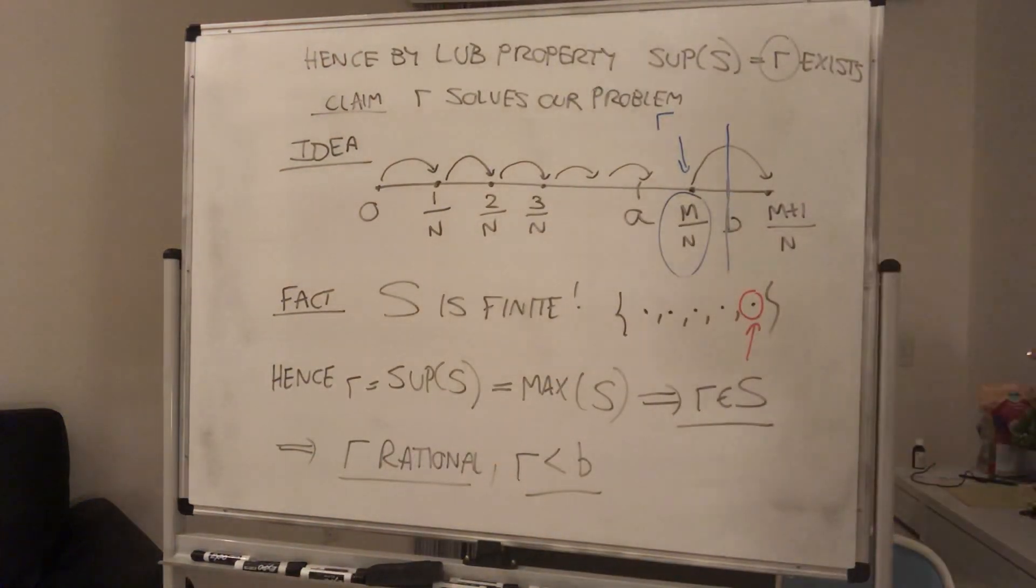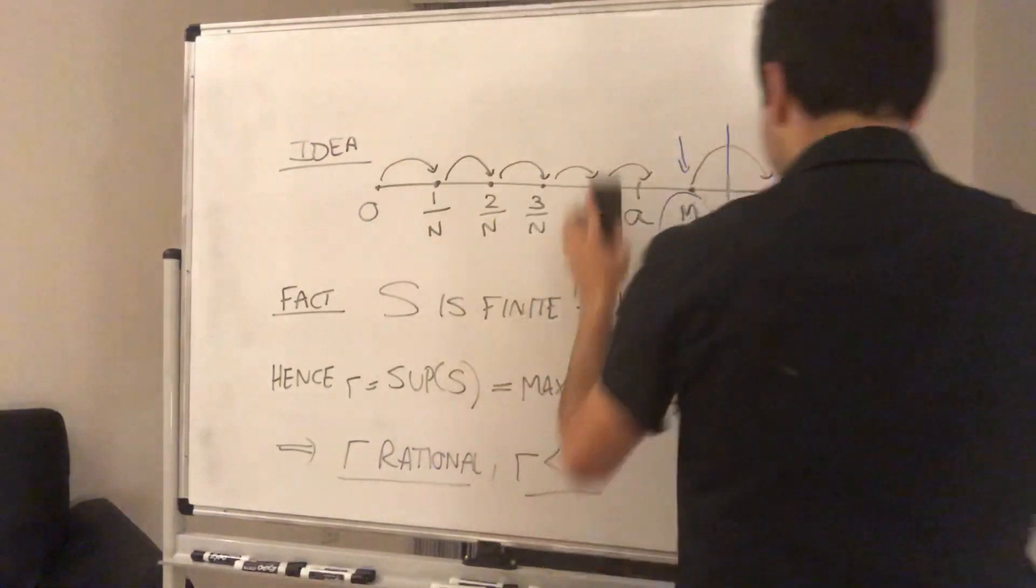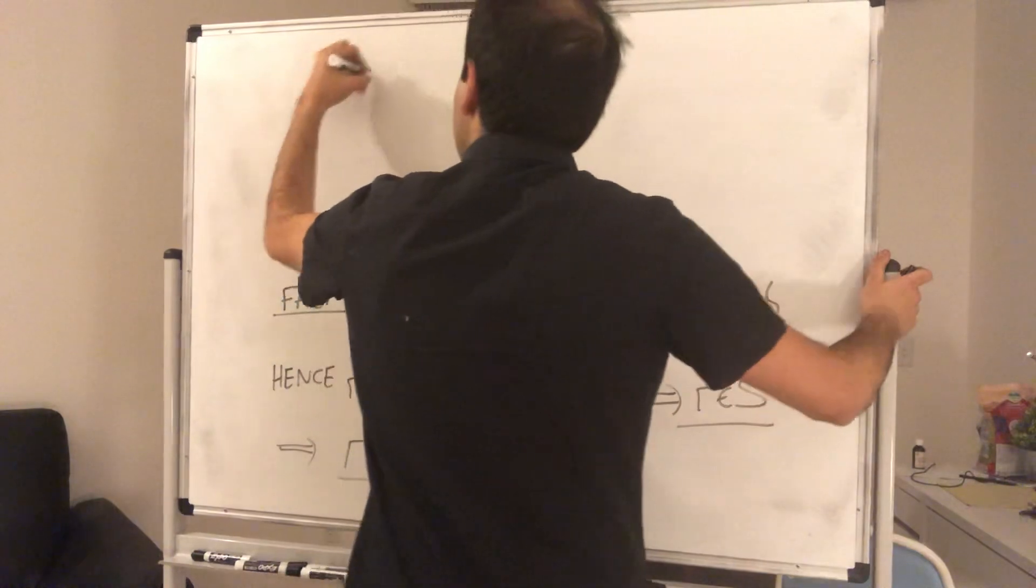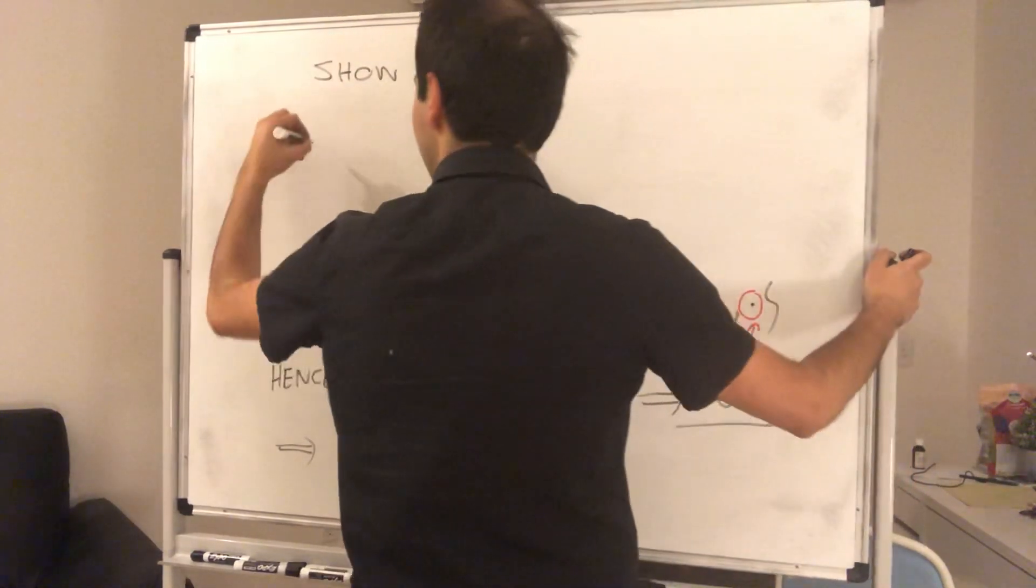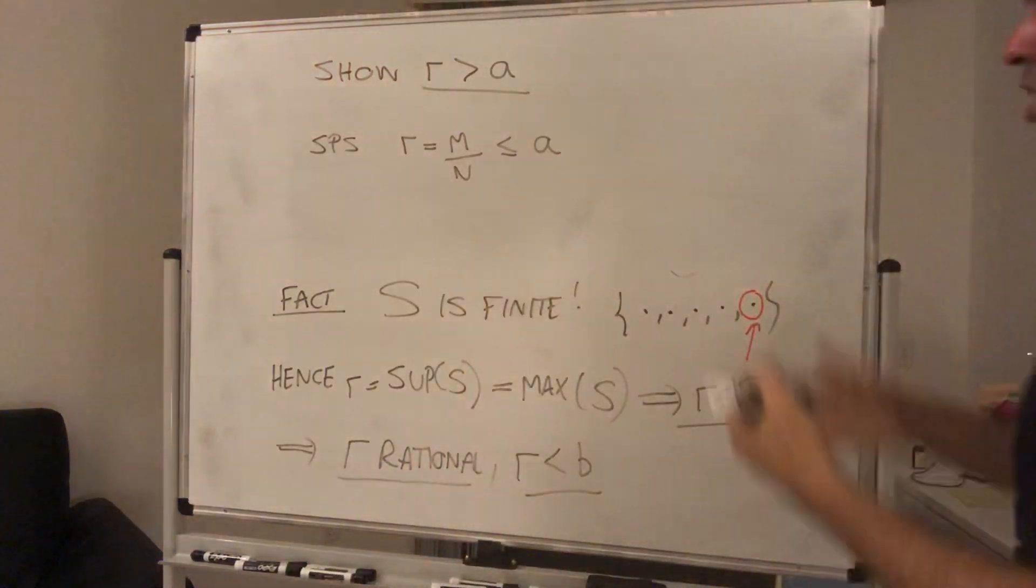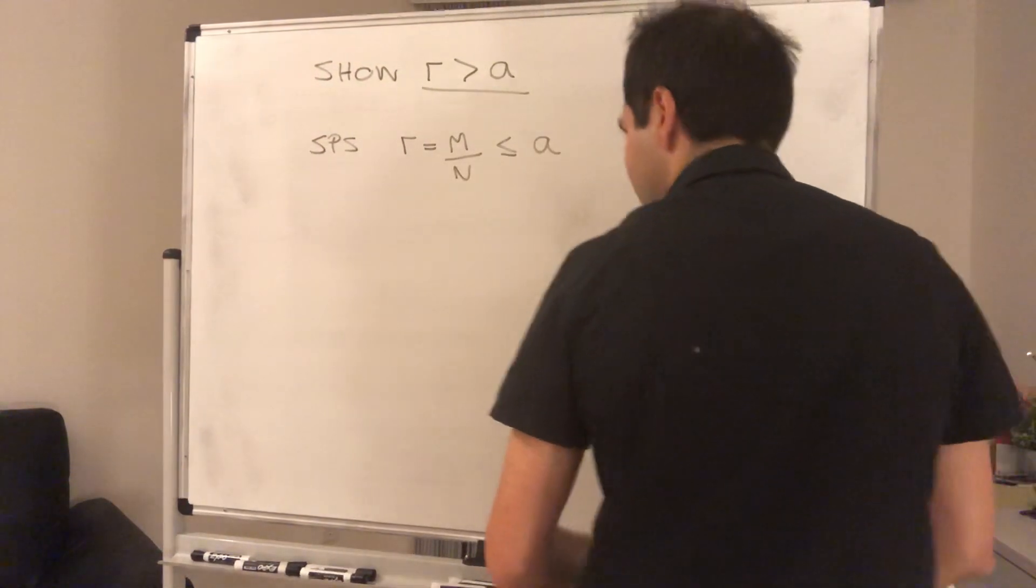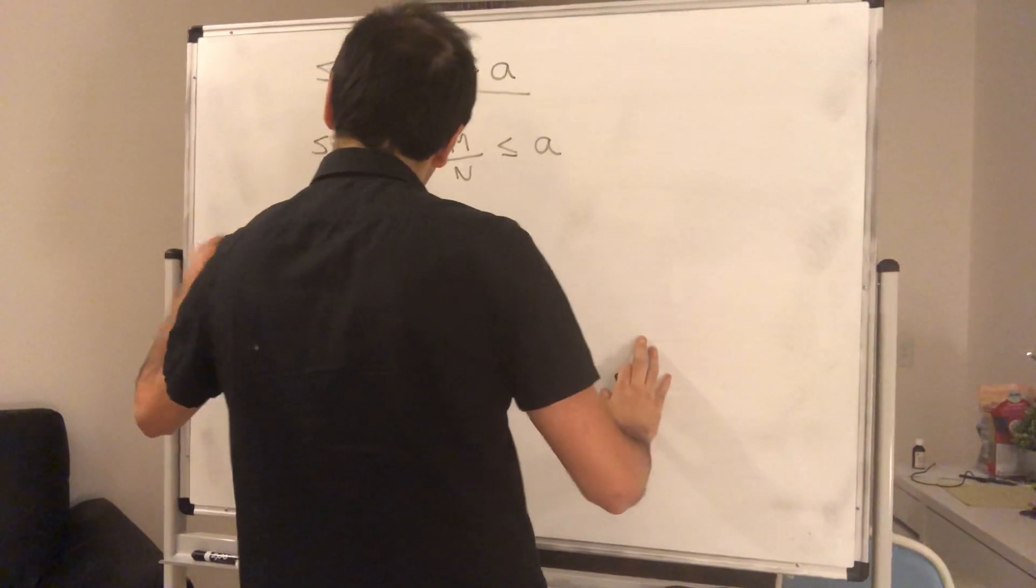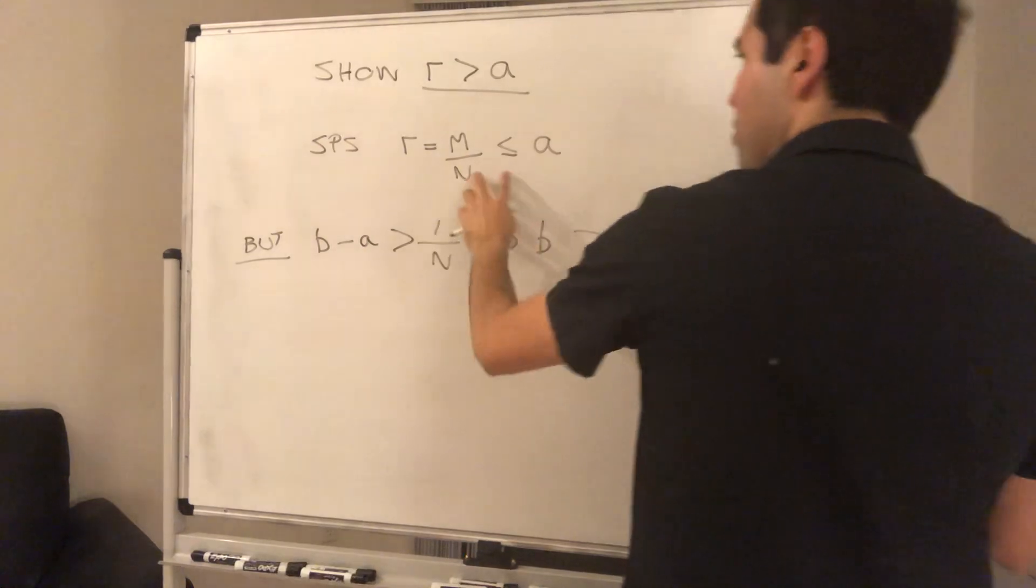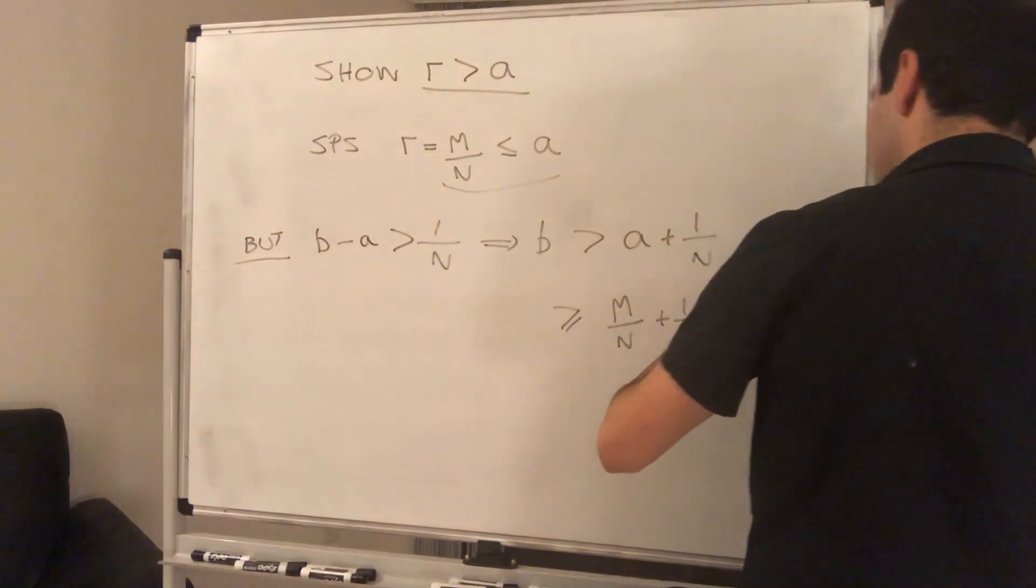Because again, we said r is a rational number that's less than b. So all that we need to show is that r is strictly greater than a. To show r is strictly greater than a. And we do that by contradiction. So suppose r, which is m over n, is less than or equal to a. But now remember, a and b, they're far apart. So then, remember b minus a. But b minus a is strictly greater than 1 over n. That implies b is strictly greater than a plus 1 over n. But a is greater or equal to r. So that's greater or equal to m over n plus 1 over n. And that's m plus 1 over n.